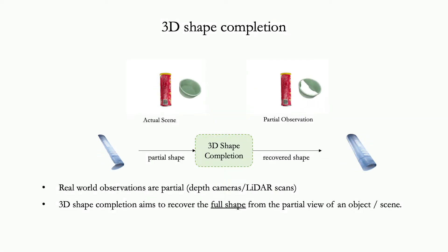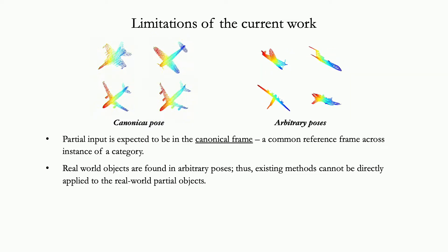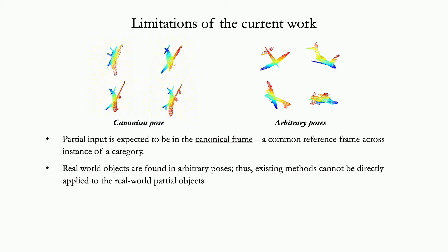3D Shape Completion aims to recover the full 3D shape from a partial view of the object or scene. Existing 3D Shape Completion methods expect the partial observations to be in a canonical form, limiting their use in the real world where objects are found in arbitrary poses.